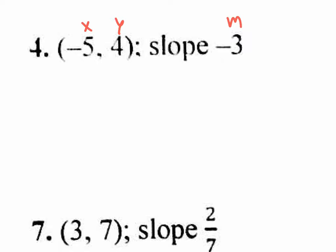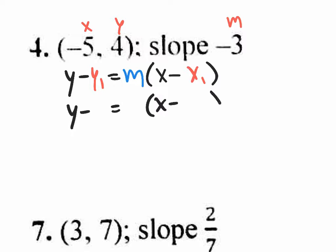y minus y1 equals m times parenthesis x minus x1, close parenthesis. So we could actually use this new knowledge to go back and do this homework a lot faster, right? We could actually just plug it into our blank spots: y minus blank spot equals blank spot times x minus blank spot. And let's plug in our y1 value of 4, our m value of negative 3, and our x value of negative 5.